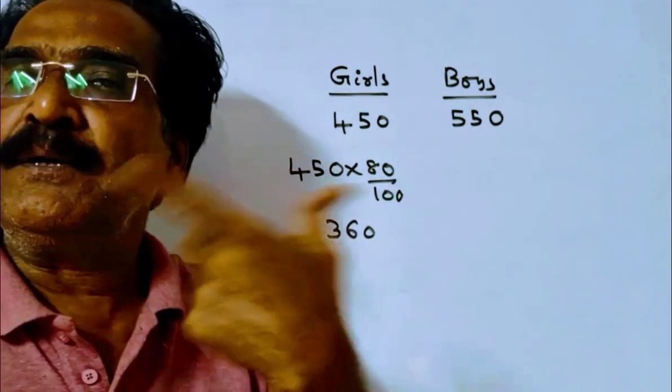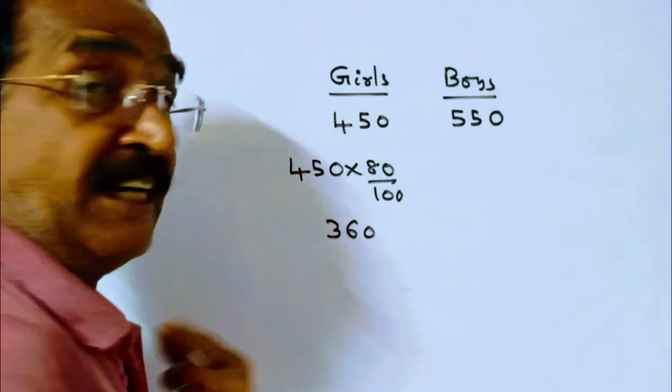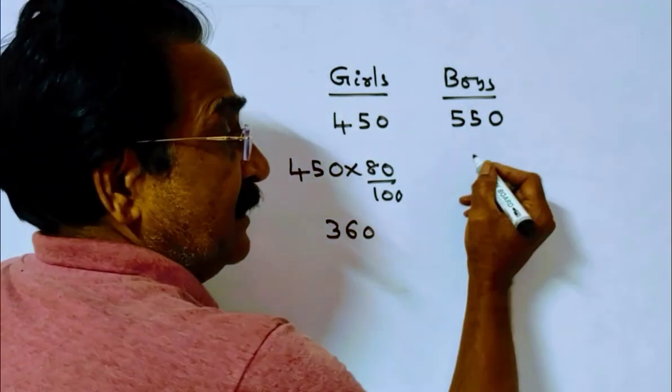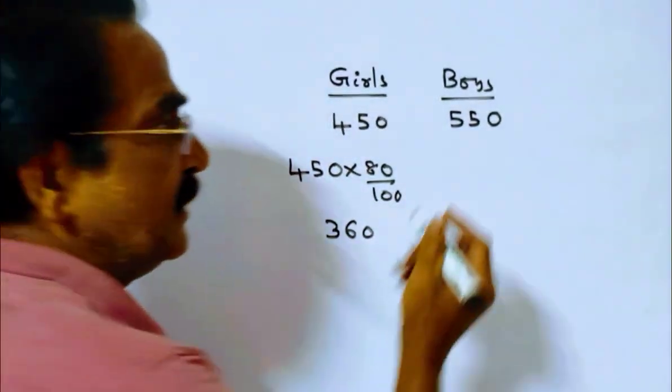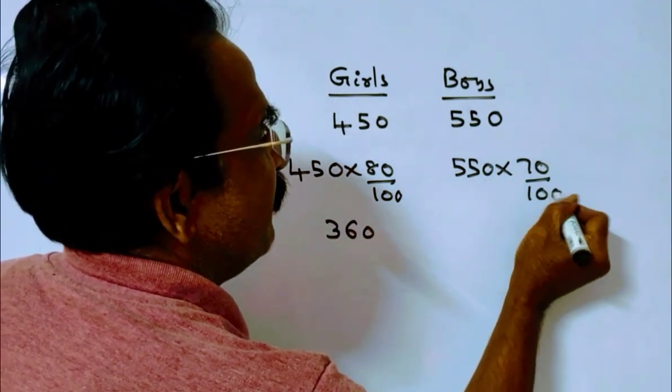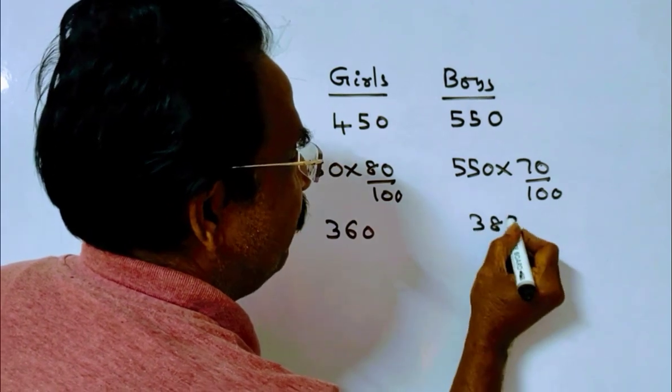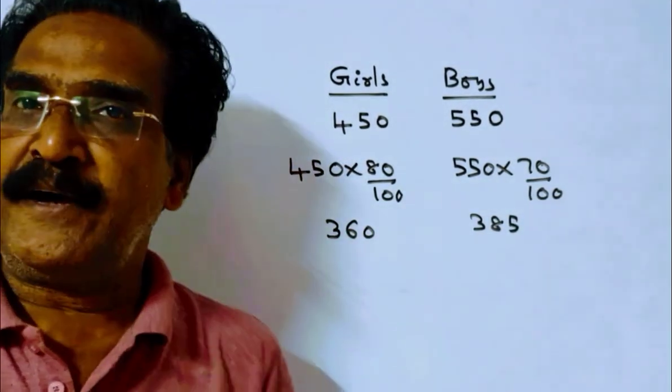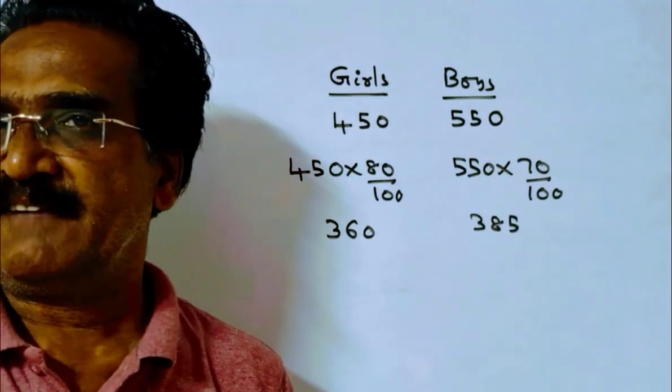And 70% of the boys, 70% of the boys. So 7×55 is 385. 385 boys scored more than 75% marks.